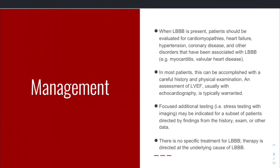How do you manage left bundle branch block? You have to manage the underlying presentation. If it's heart failure or cardiomyopathy, you focus on the actual cause. History, physical exam, ECG, and an echocardiogram will drive your investigations and treatment. You may also do a stress test. For the bundle branch block specifically, there is no direct treatment — you just treat the underlying cause based on history and clinical examination.